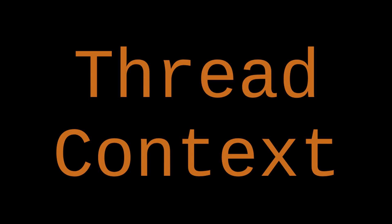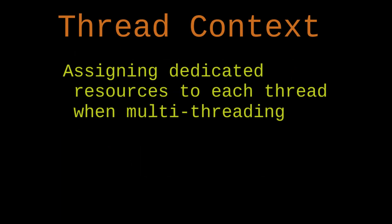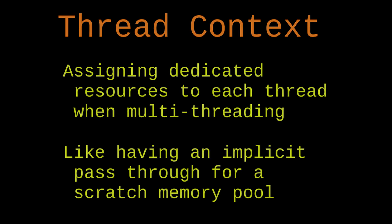In today's session, I want to add a thread context system to the code base. The thread context system is going to help address two important problems. First, it's going to help with assigning unique private resources to each thread. And second, it's going to give me a very convenient way to tie a scratch memory pool to the frames on a call stack without having to manually pass it through the call stack everywhere.